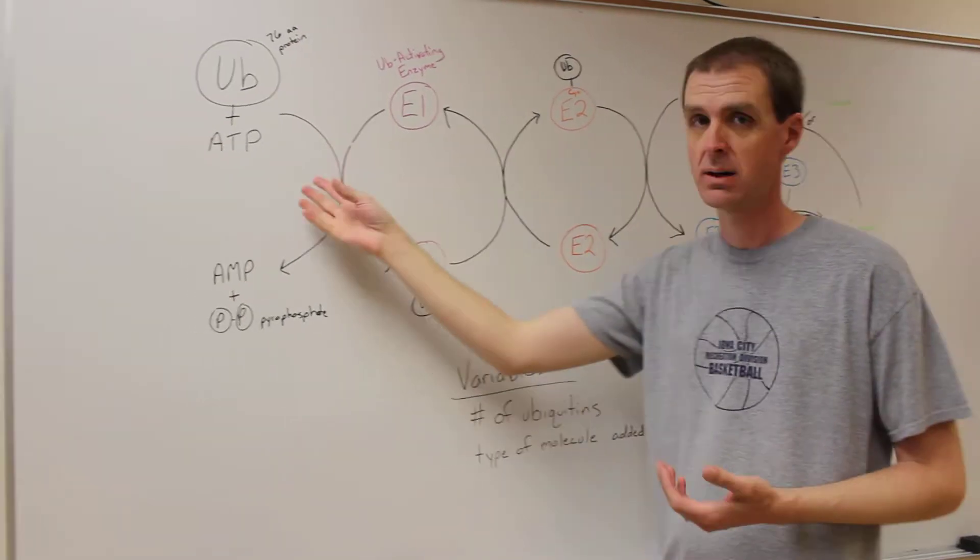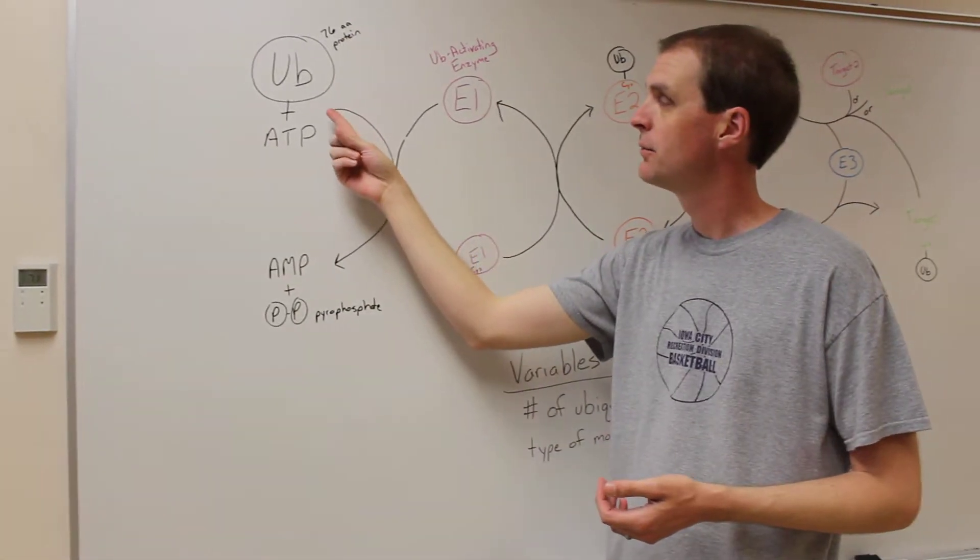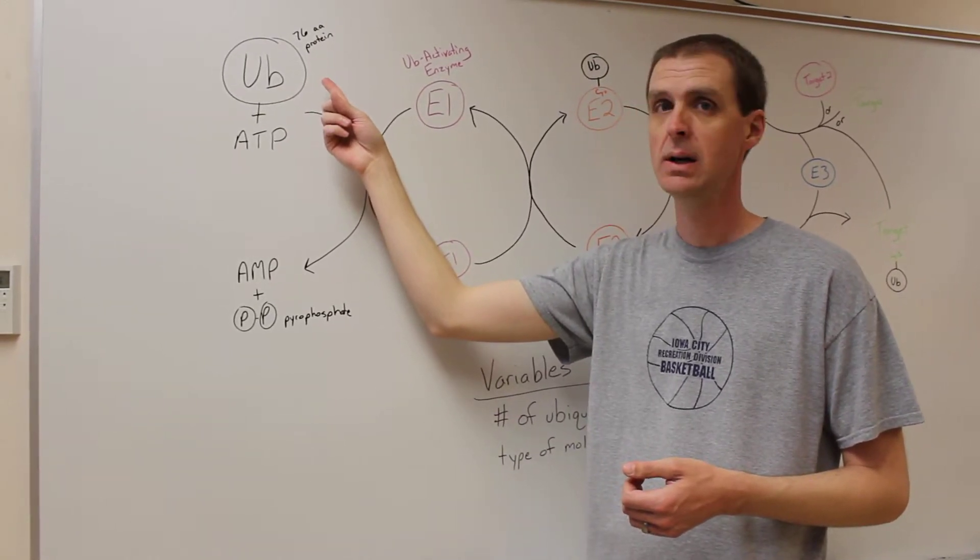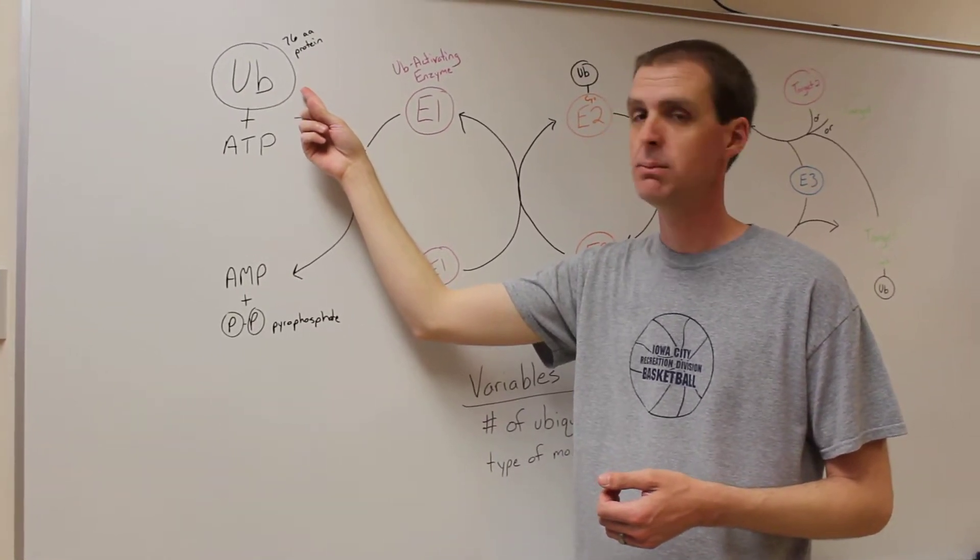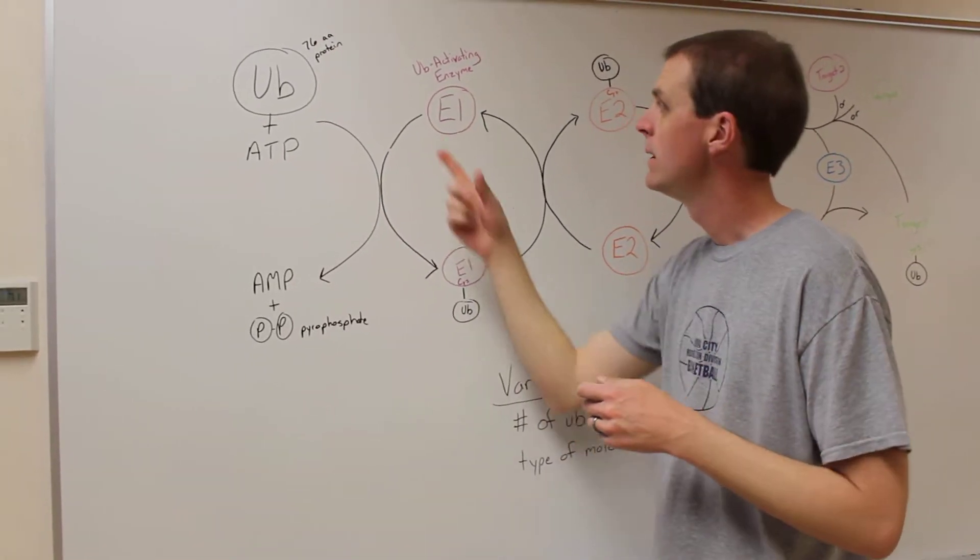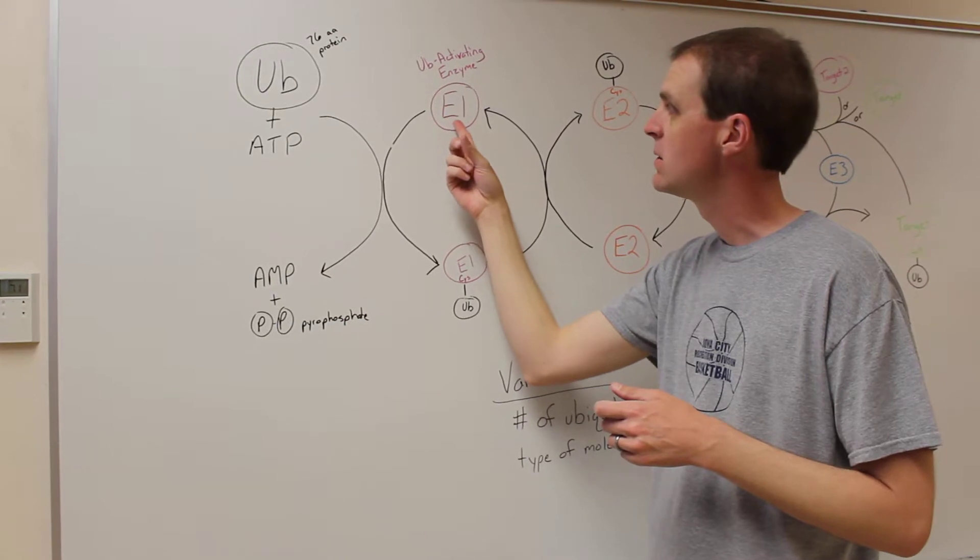But let's start at the beginning. You have a small protein that's just 76 amino acids called ubiquitin in the cell, and it is a protein that can be covalently attached to other proteins.